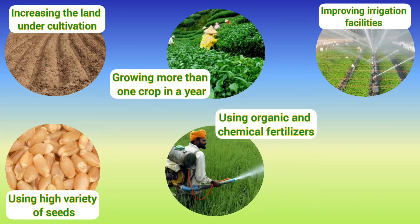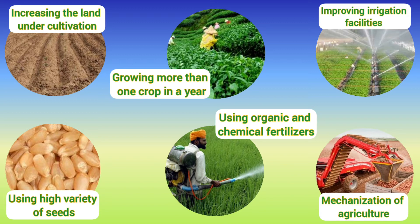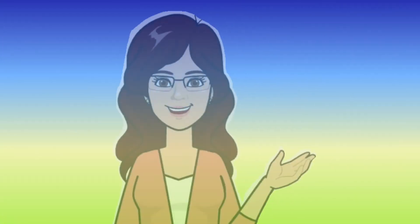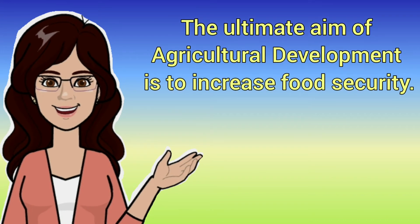Using organic and chemical fertilizers, mechanization of agriculture, etc. All these help in increasing the farm production, which is the main aim of agricultural development. In other words, the ultimate aim of agricultural development is to increase food security.